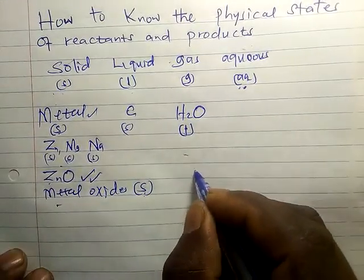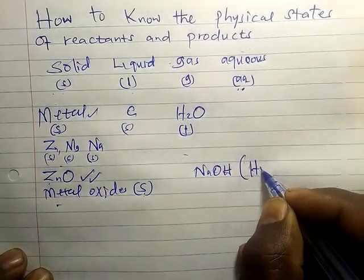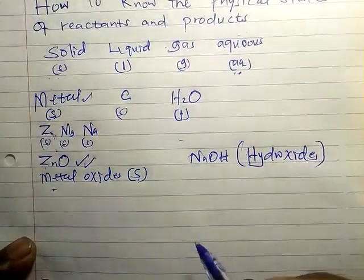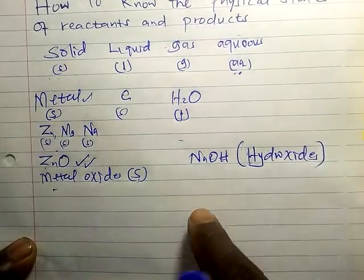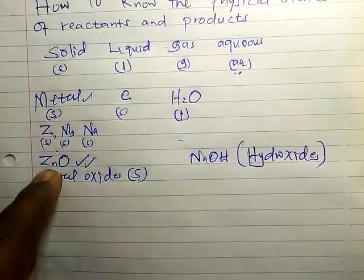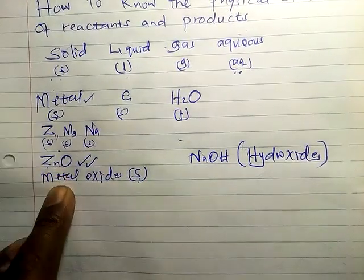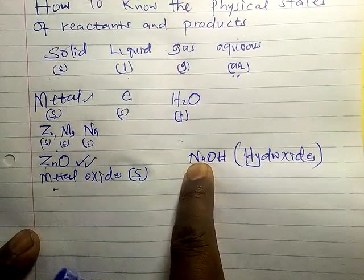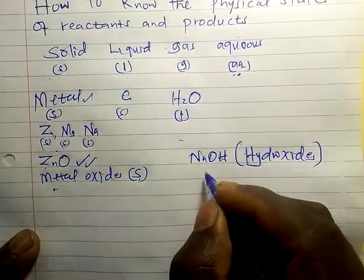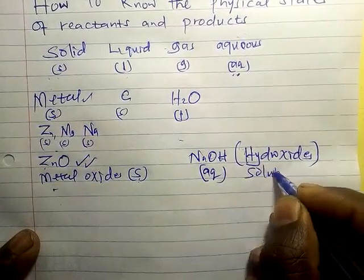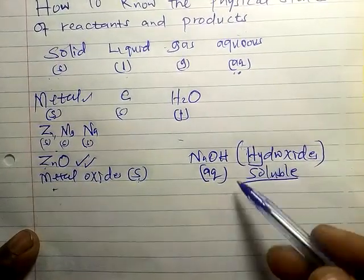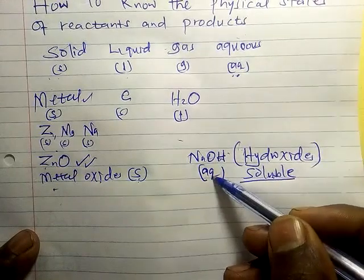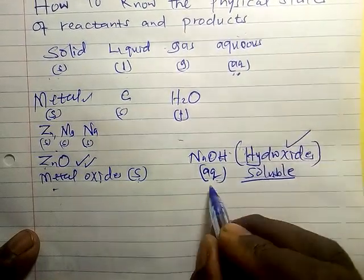What about hydroxides — like sodium hydroxide? Most oxides are insoluble, that's why they are in solid form. But sodium hydroxide, magnesium hydroxide, potassium hydroxide — all of them are aqueous. If you see a hydroxide, it is soluble in water, so it is aqueous. You must master that: for hydroxides — aqueous; for oxides — solid.